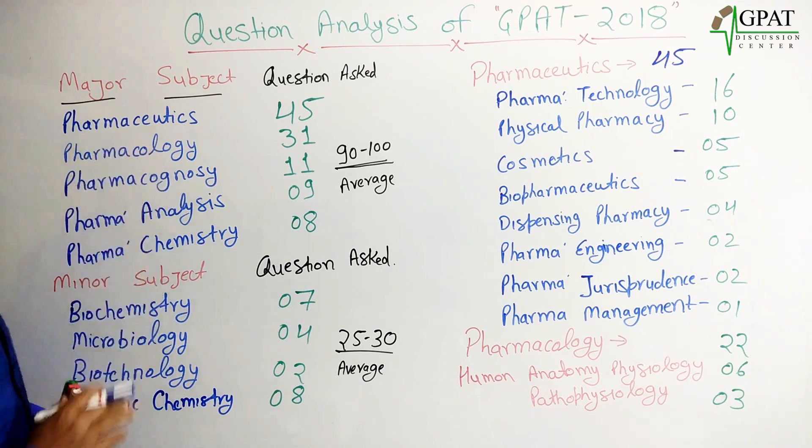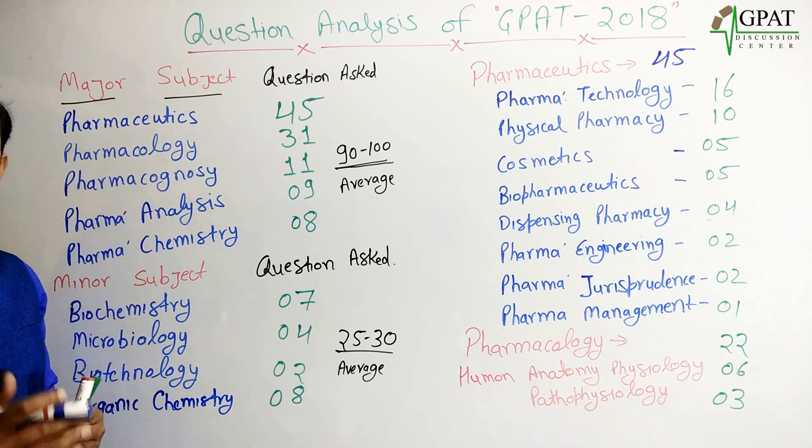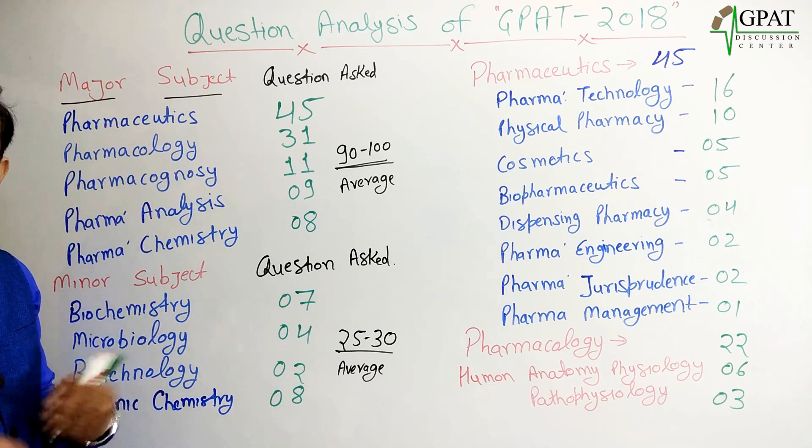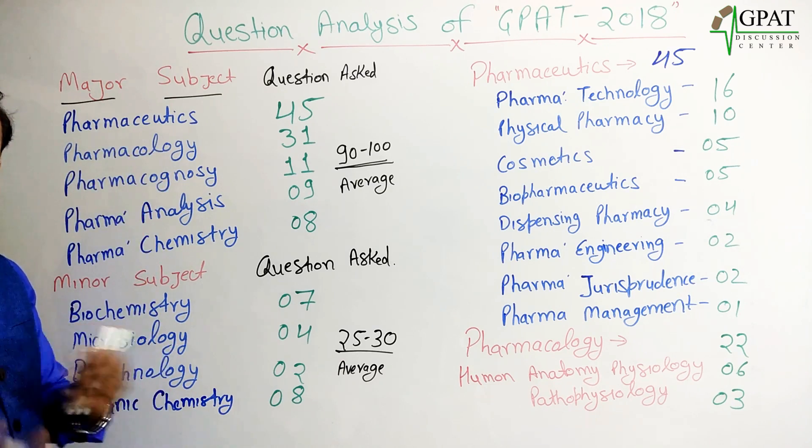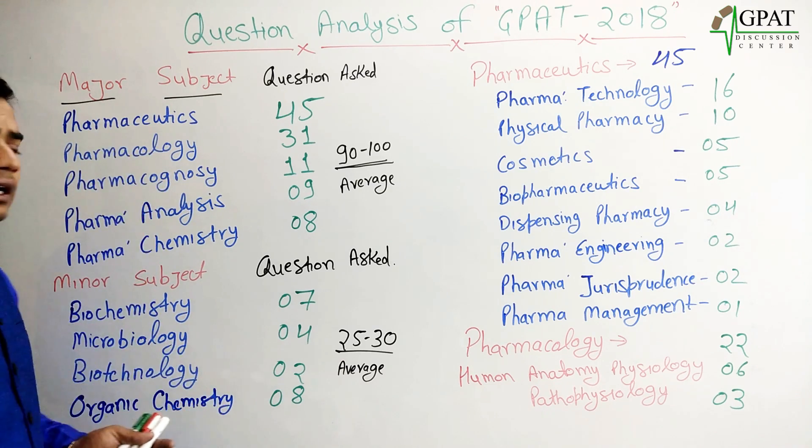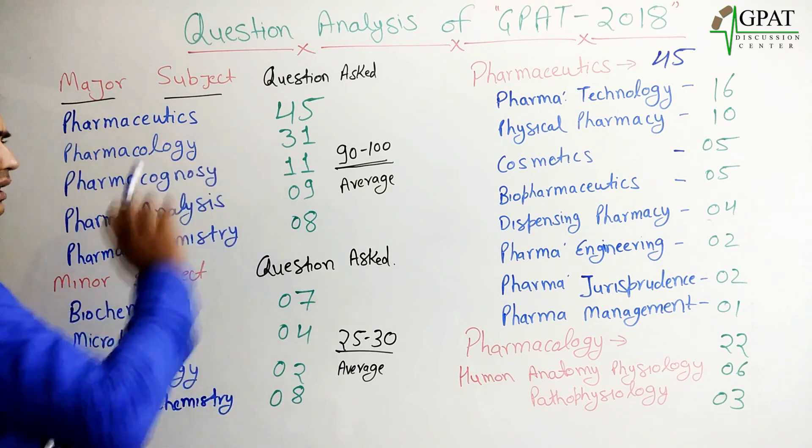From the pharmacology group — that includes anatomy, physiology, pathophysiology, and pharmacology — combined, 31 questions were asked.